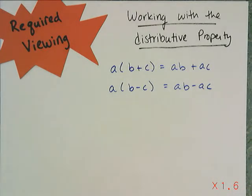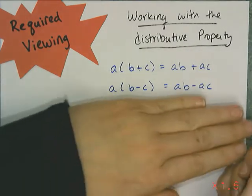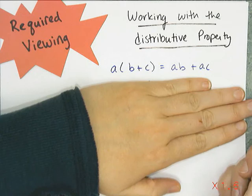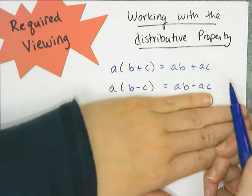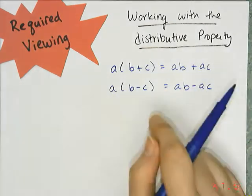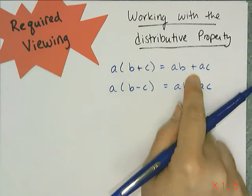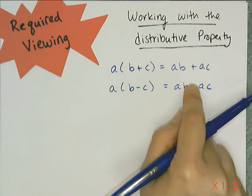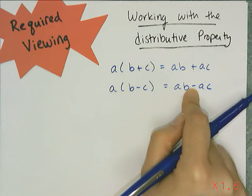In this first video you have to watch for homework, we're going to talk about working with the distributive property. There's only one version of the distributive property, but because subtraction is adding the opposite, you can write another version that has a subtraction inside. Just be very careful of which one you have — if you have the addition one, you put a plus sign in between; if you have the subtraction one, you put a minus sign in between.